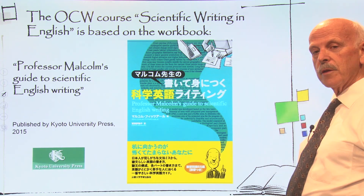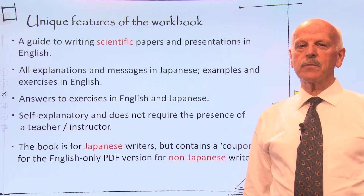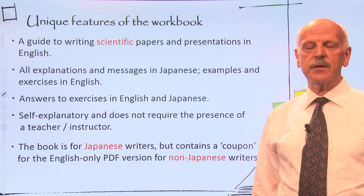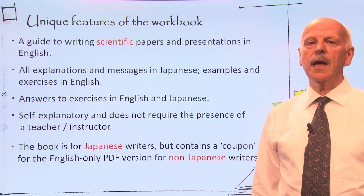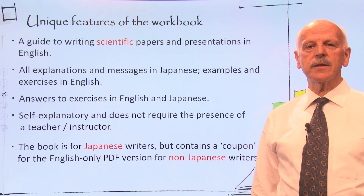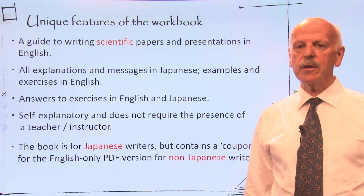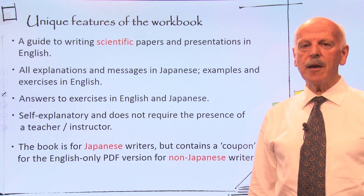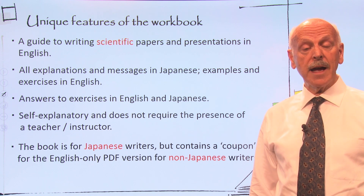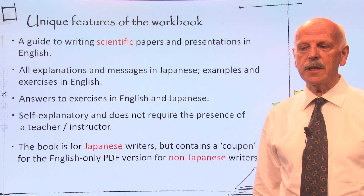Here you can see a picture of the cover. The unique features of this workbook are that it is a guide to writing scientific papers and presentations for science. The book has all the explanations and messages in Japanese, and the examples and exercises are in English. The answers to the exercises are in both English and Japanese.